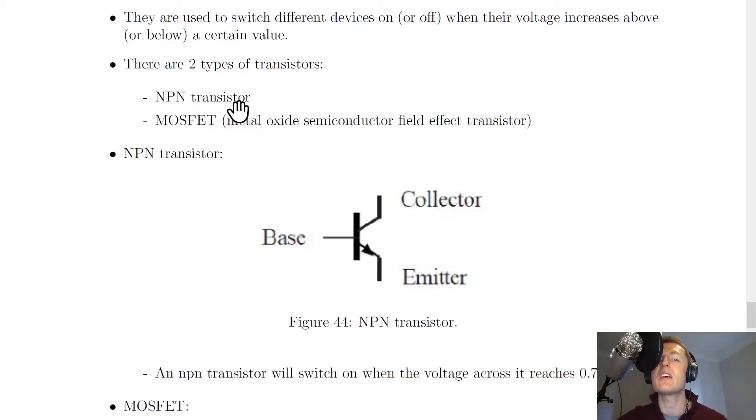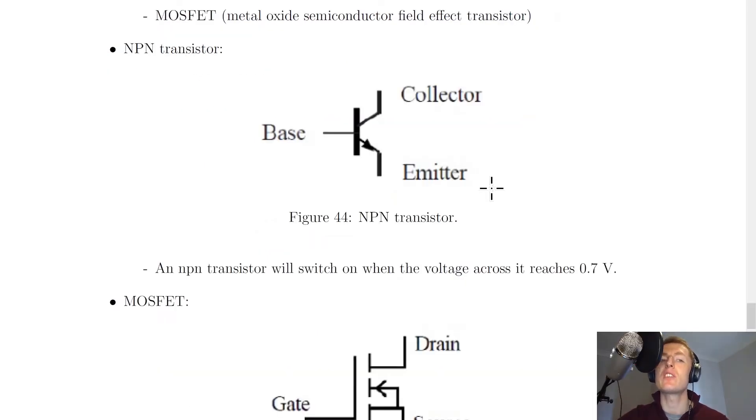The NPN transistor stands for N-type, P-type, and N-type, and these are the types of semiconductor materials sandwiched together to form this transistor. What do these transistors look like? Here's the NPN transistor which consists of a base, collector, and emitter.